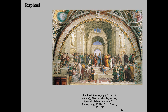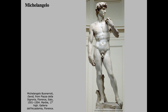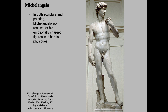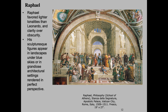And then there's Michelangelo. This is a marble statue, 17 feet high — a biblical figure from the Old Testament, David. In both painting and sculpture, Michelangelo won renown for his emotionally charged figures with heroic physique — this sense of the perfect man. He preferred pent-up energy; this is the moment before David is going to throw the stone, so he has all this energy. By contrast, Raphael's figures are more calm and solid in the space.